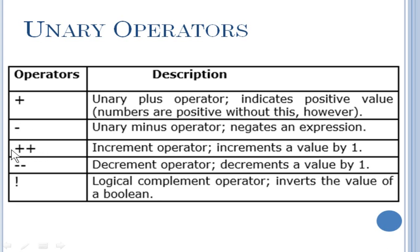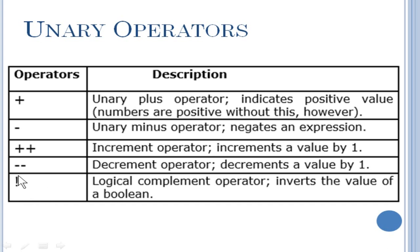Next is the increment operator, which will increase the value by one. If you put plus plus in front of the variable or after the variable, it increases the value by one every time. Next is the decrement operator — that is minus minus. If you use it with a variable, it will decrease the value by one every time you execute that statement. Finally, you have the NOT operator, which is a logical operator that inverts the value in a boolean expression. So if an expression returns true, the NOT operator converts it to false, and if the expression is false, it returns true.